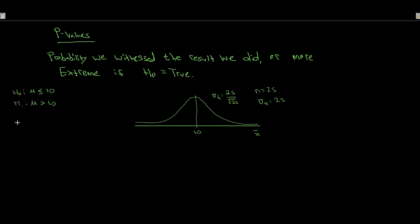Step two: let's say that we're going to test this at the 10% level in this case. We did 5% in our last video so let's change it up. And of course we know what sigma is; we're doing x-bar. So step three, we're doing z equals x-bar minus mu all over sigma sub x-bar, which is sigma over root n.